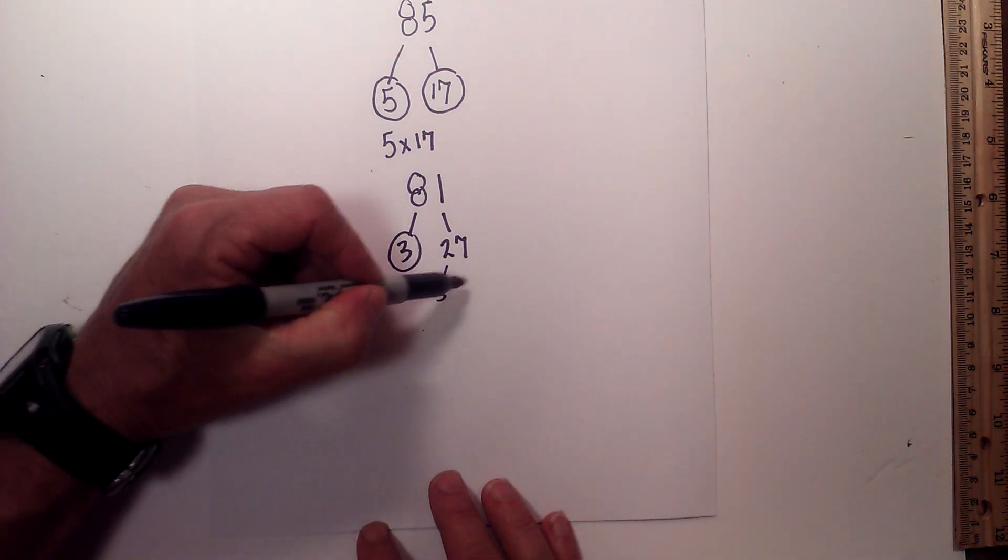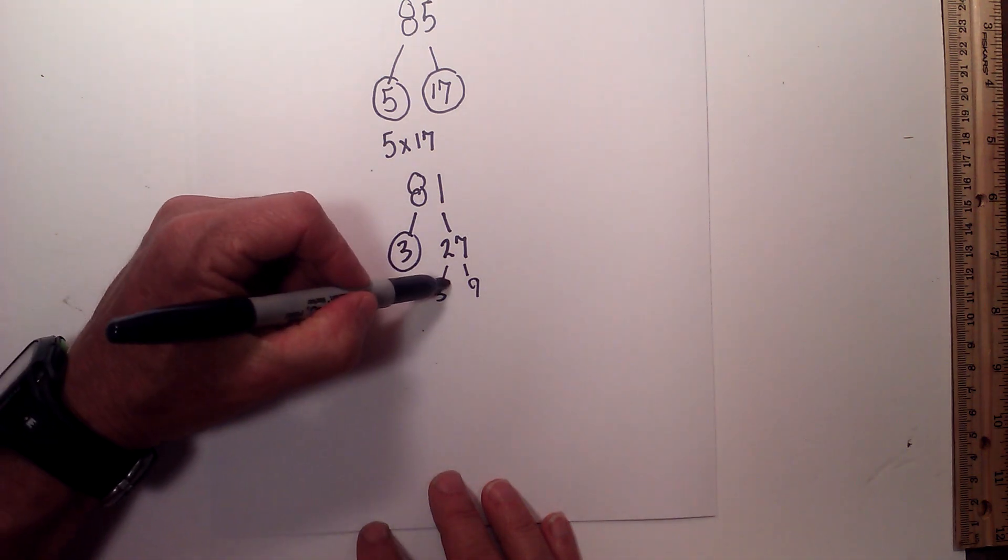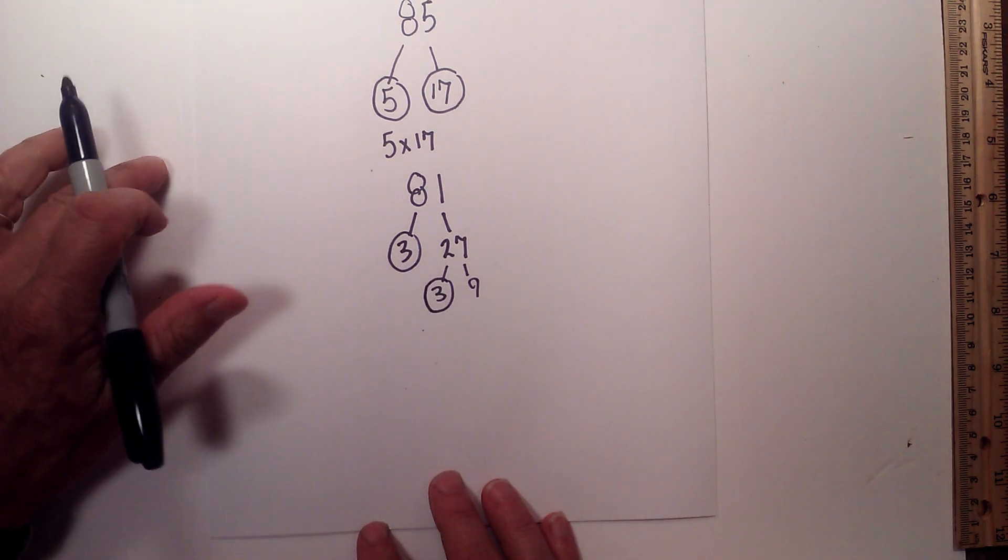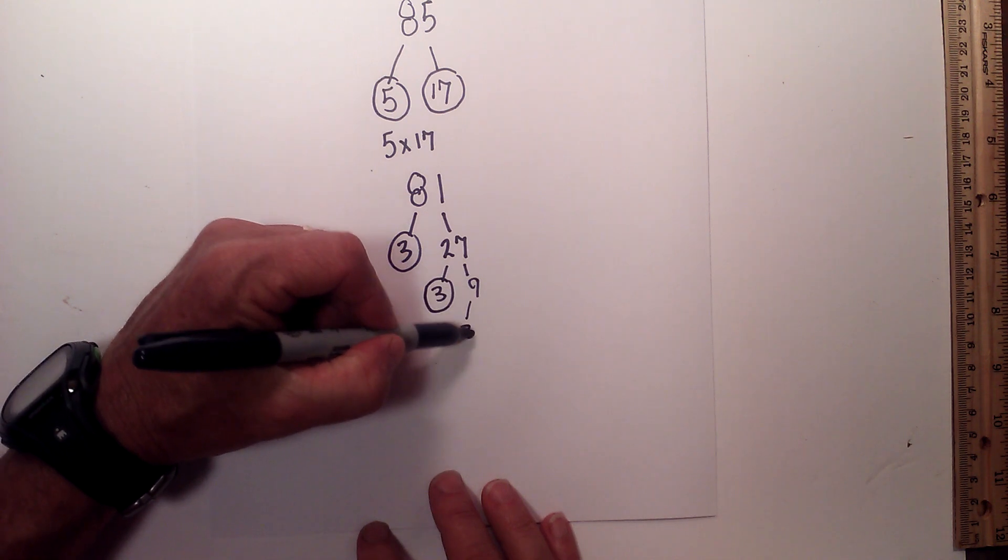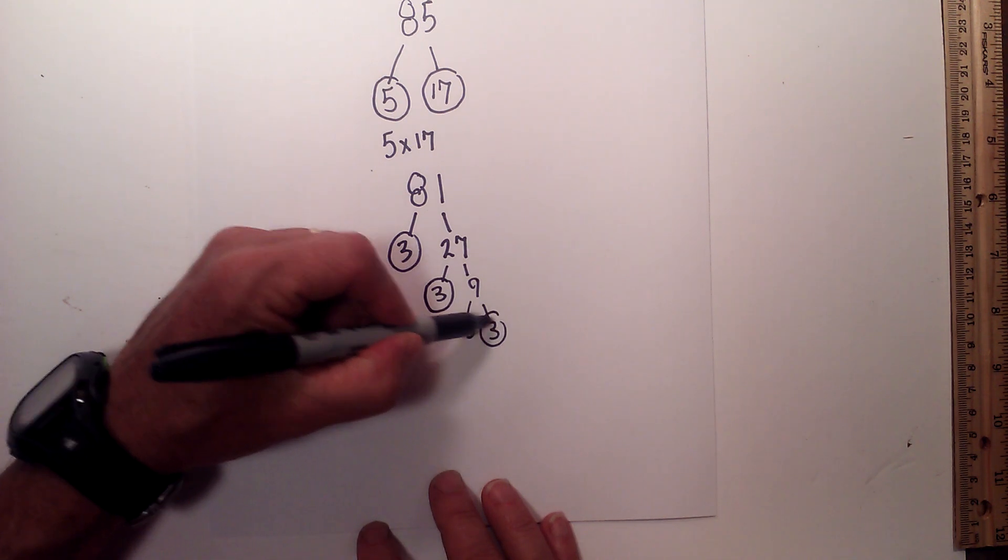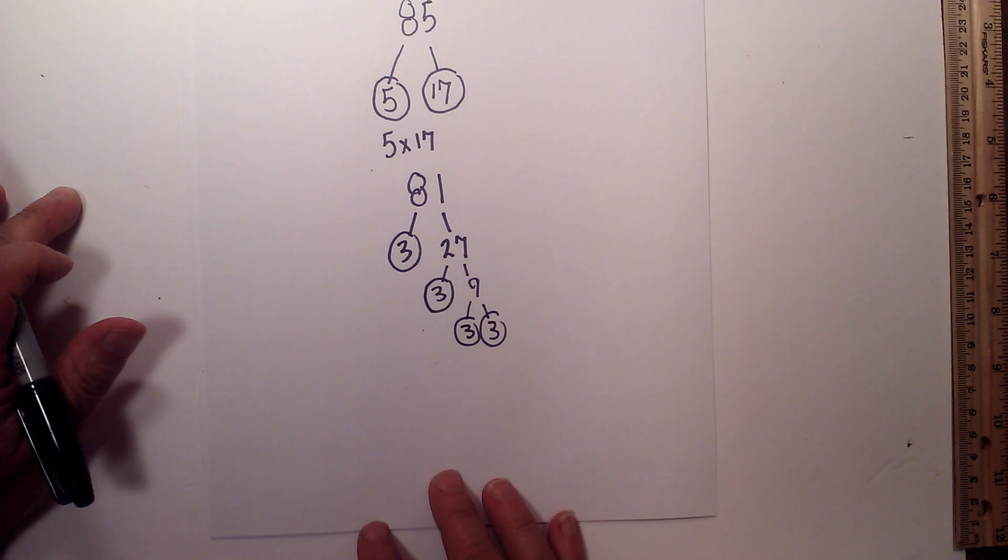Now 3 times 9 is equal to 27. I will circle the 3. Now 3 times 3 equals 9. And I will circle both of those.